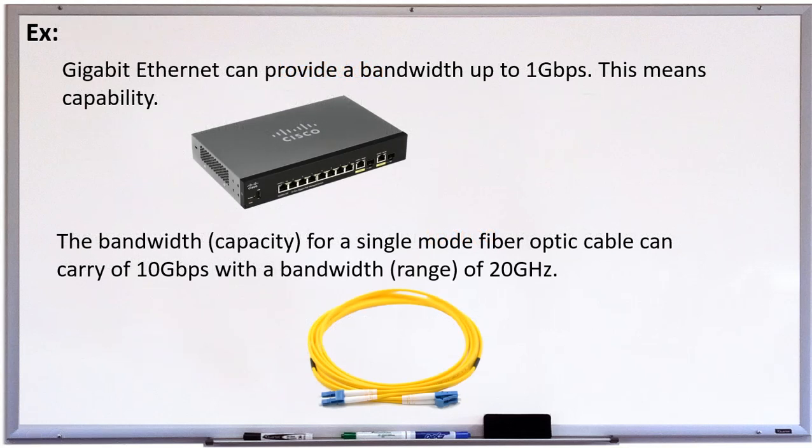I will give you example for switch and for fiber optic cable. Gigabit Ethernet can provide a bandwidth up to 1 gigabit per second. Like this switch. This is gigabit Ethernet switch. It's the switch that can allow data to transfer up to 1 gigabit per second. That's called a bandwidth of the ports. One more thing is fiber optic cable. This is the single mode fiber optic cable. Can carry up to 10 gigabit per second or more than that. With a bandwidth of 20 gigahertz. That is also called bandwidth of 20 gigahertz. So this is what is the bandwidth.